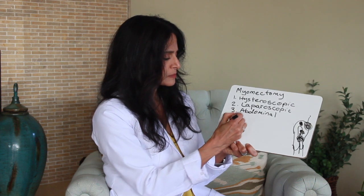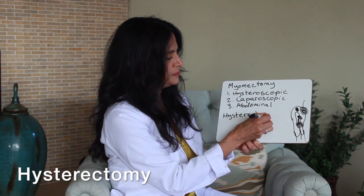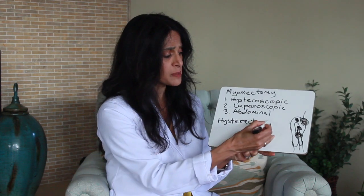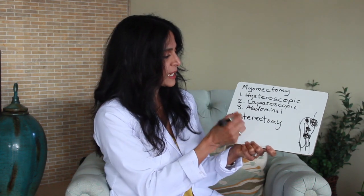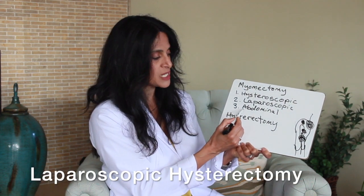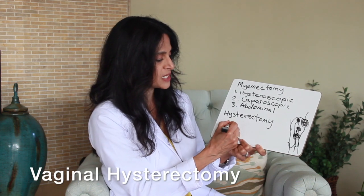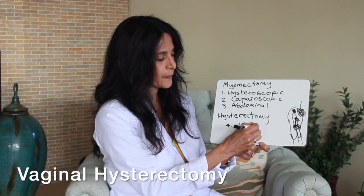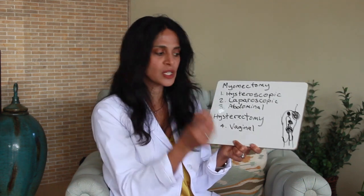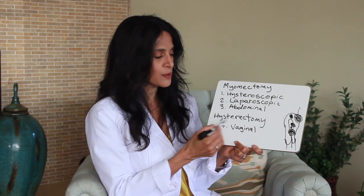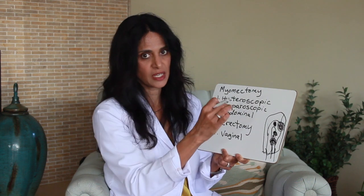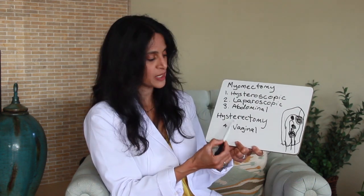The other surgical option is known as a hysterectomy, and hysterectomies can also be done through various approaches. It can be done laparoscopically, through an open abdominal incision, or vaginally. If the uterus isn't too big, the surgeon can make an incision through the vagina at the top of the vagina and pull the cervix and the uterus out that way. So with hysterectomy — which is removal of the whole uterus — we could do it laparoscopically, abdominally, or vaginally.